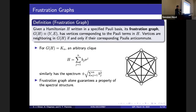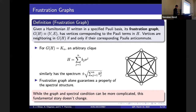What's important here is that the frustration graph by itself actually guarantees a property of the spectral structure. Just by looking at this graph, we know something about the spectrum regardless of the strengths of the coupling coefficients. That's the underlying philosophy of this work: while we can make the graph more complicated and the spectral condition becomes more complicated, this chain of implication continues to hold.